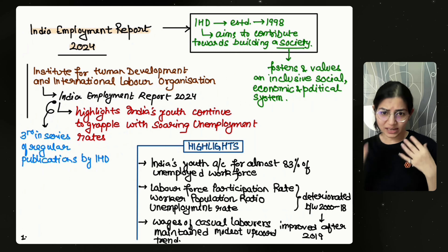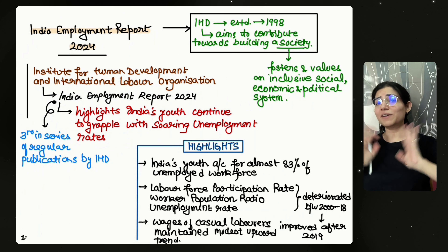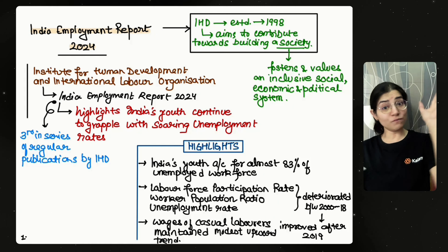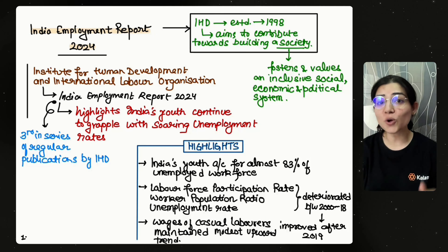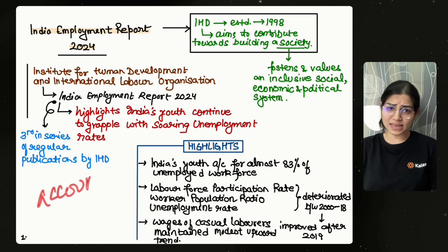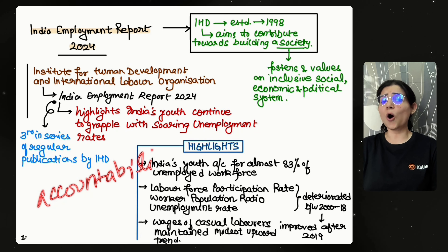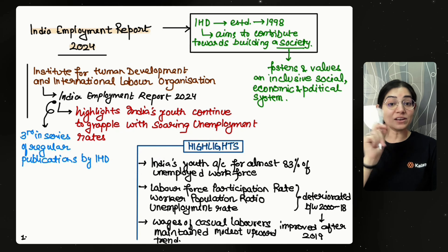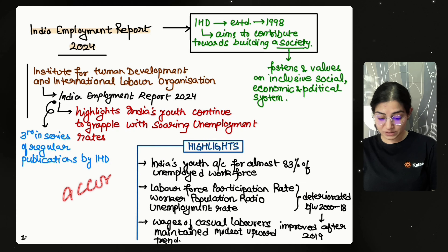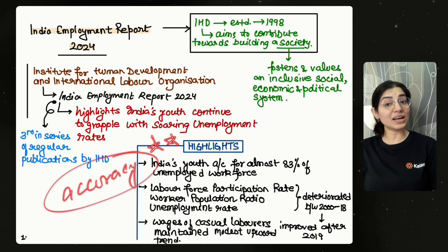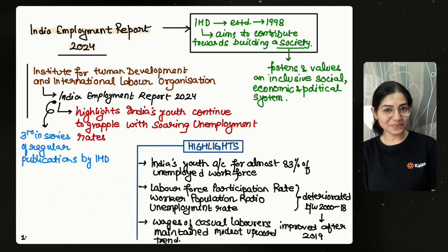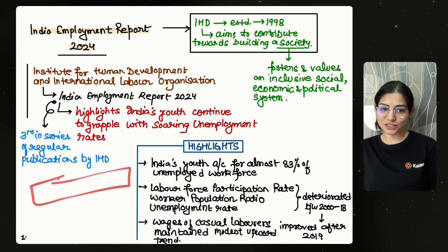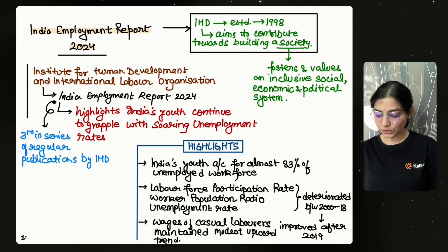These were the most important current affairs topics for today. Homework is given in the comment section and description box — you have to solve it. I maintain accountability in my class, so you have to share your scores in the comment section and I will read each and everyone's score and help you improve your accuracy. You can also access class notes on SuperKalam.